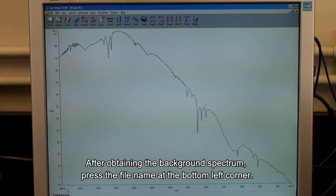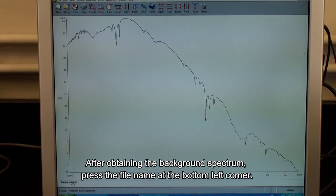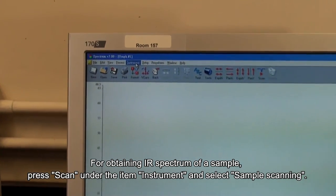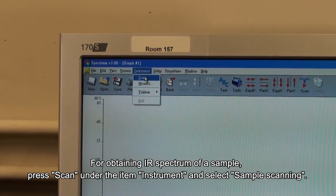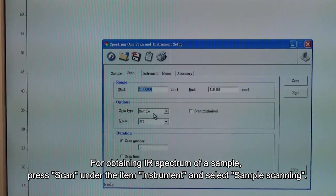After obtaining the background spectrum, press the file name at the bottom left corner. For obtaining IR spectrum of a sample, press scan under the item instrument and select sample scanning. Rename the file name of the spectrum.